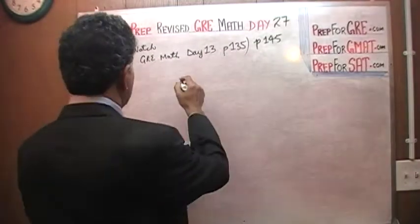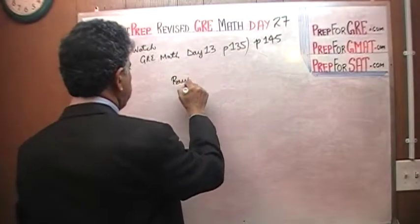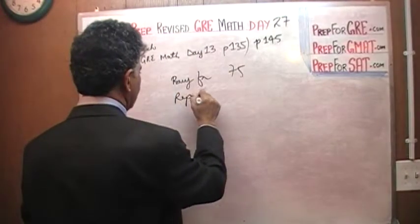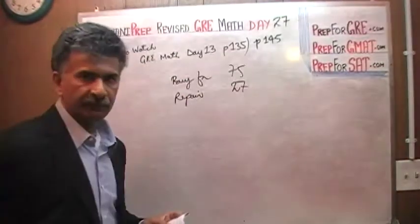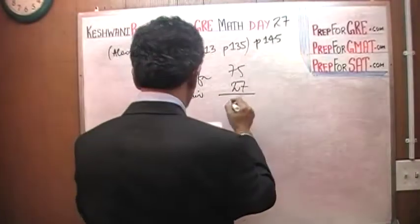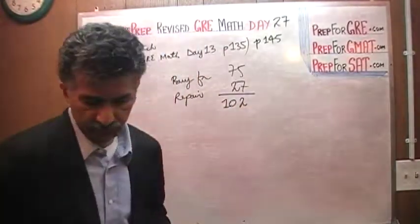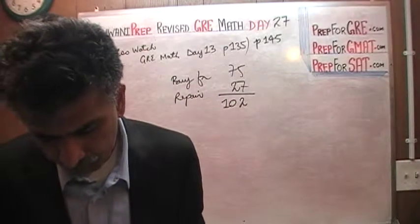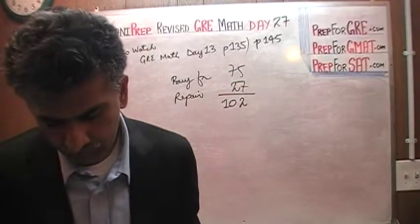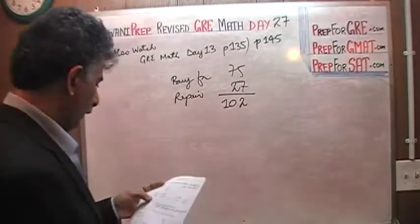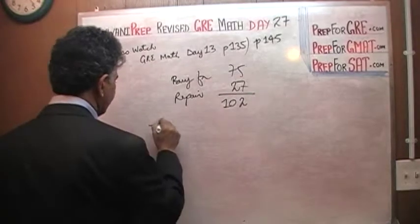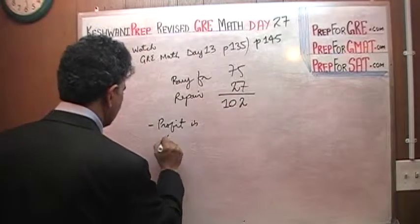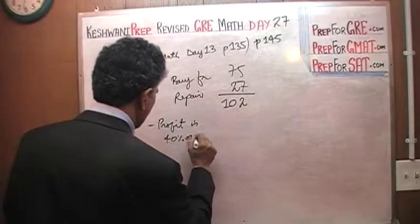Here's the question: we are buying a bicycle for $75, and we are going to repair it for $27. Altogether it costs $102. The question goes on to say that after repairing the bike, she sold it for 40% more than the total amount she spent buying and repairing it. So the profit she is making is 40% of 102.